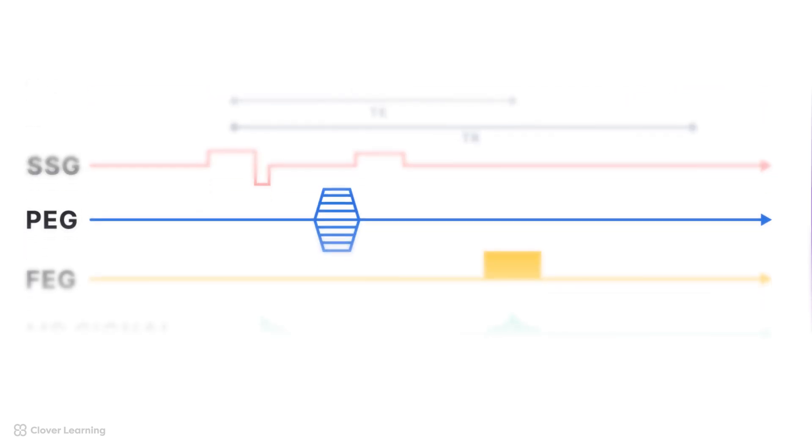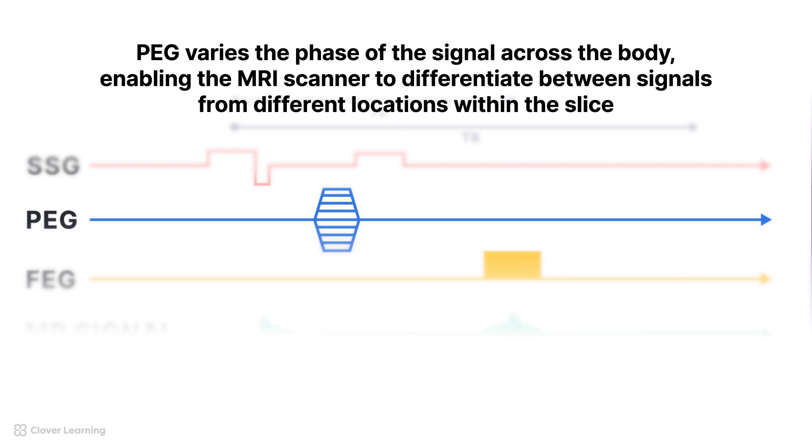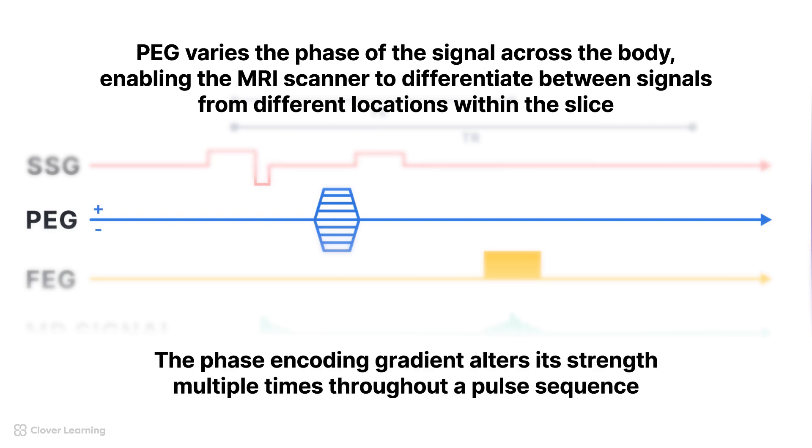The third line depicts the phase encoding gradient, or PEG. You may see this labeled as G sub P. Phase encoding is demonstrated as a series of stepped lines or spikes along the phase encoding gradient line. It varies the phase of the signal across the body, enabling the MRI scanner to differentiate between signals from different locations within the slice. The phase encoding gradient is turned on after the slice selection gradient is turned off. The PEG alters its strength multiple times throughout a pulse sequence. So the number of stepped lines or spikes indicate the number of changes in the PEG over the course of the MRI scan.